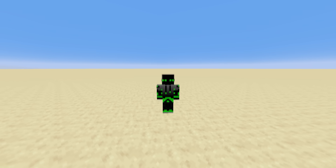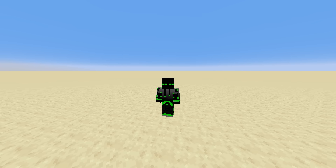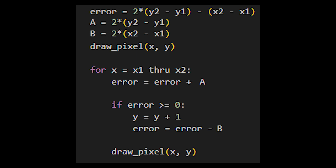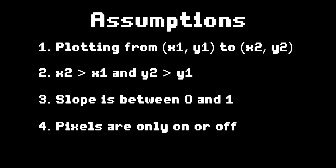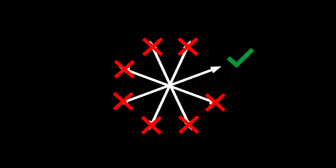Awesome, I'm really excited — this is going to look amazing on the real screen. There is one problem I've been avoiding though: this algorithm, as it stands, doesn't automatically work for all types of lines. Remember, in the assumptions, we're only dealing with lines that increase in x, increase in y, and have a slope between 0 and 1. That's pretty restrictive, and these types of lines only cover about an eighth of all the possible lines there are.